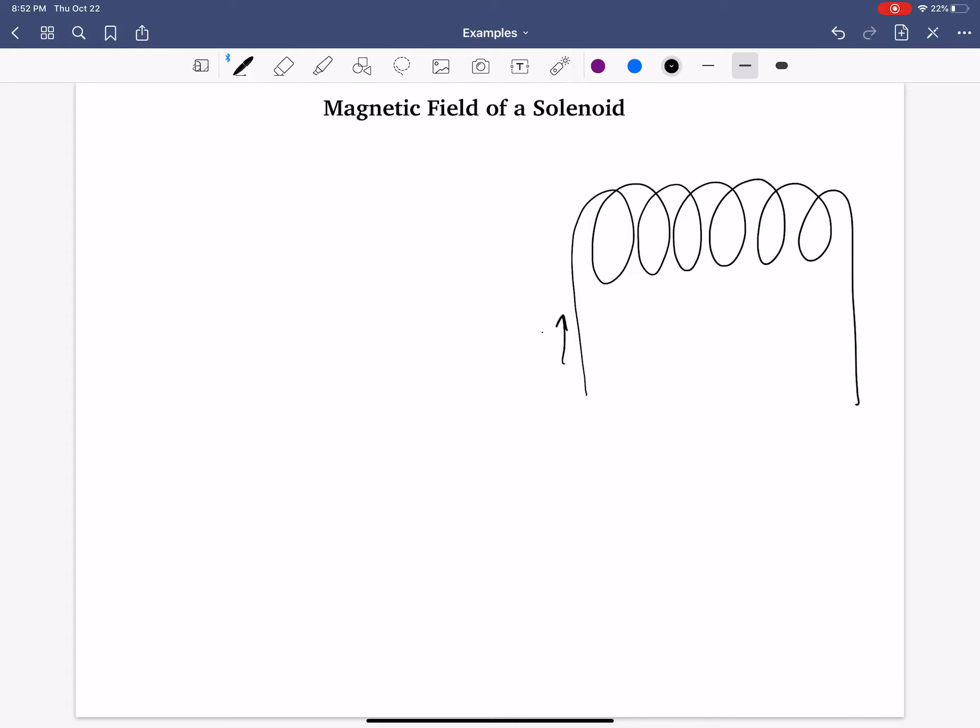And this has a current, we'll say, going up that end such that it goes down that end. Alright, and so I've kind of drawn this from a side vantage point. These loops here are going into and out of the page. Okay, and they are usually very close together, if not side by side.